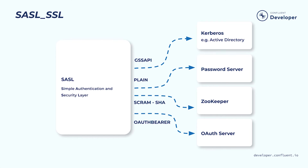Each of these mechanisms has some configuration overhead, and in the case of all of them apart from SCRAM-SHA-256 and 512, for production workloads you'll need to integrate with third-party servers: Kerberos in the case of GSSAPI, a password server for the PLAIN mechanism, and a trusted OAuth server for OAuthBearer.